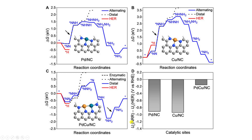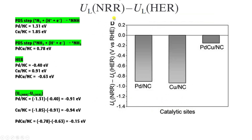Based on that, they subtracted the NRR potential with the HER rate determining step potential to get the selectivity energy. I will tell you how to calculate this energy and how to plot this selectivity profile. This is the calculation for UL(NRR) and UL(HER).